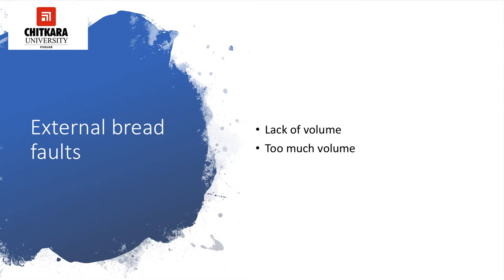The various causes for crust color too pale include: using too little sugar, milk or salt, too much yeast, under mixing, too slack dough, too much temperature for fermentation, over proofing, too much dusting flour used, under baking, too low oven temperature, or a hot proofing chamber or proofing room.